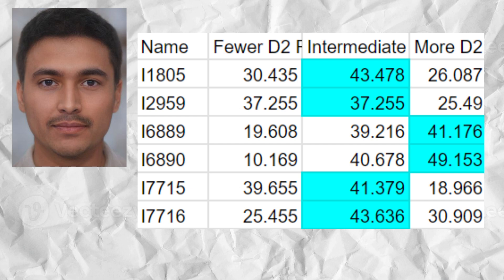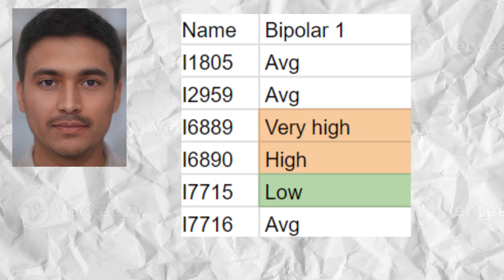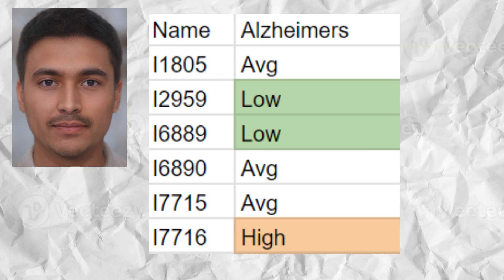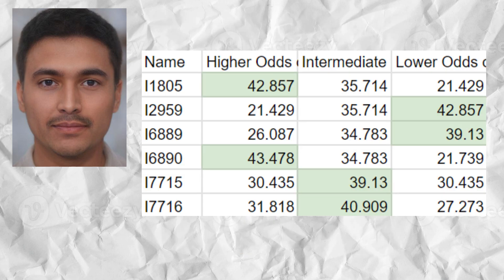Higher D2 receptor availability leads to higher odds of schizophrenia and bipolar disorder, and lower propensity for no-go learning. The samples had a high predisposition to bipolar 1, high odds of ADHD, and average odds of unipolar depression. The samples had an overall average predisposition to Alzheimer's, and average odds of autism — with two samples scoring higher odds, two scoring average odds, and two scoring lower odds of autism.